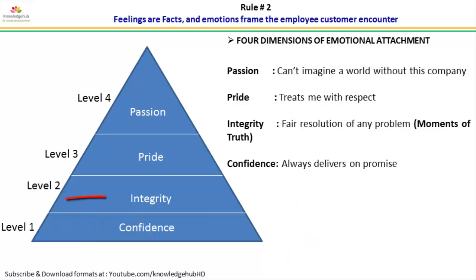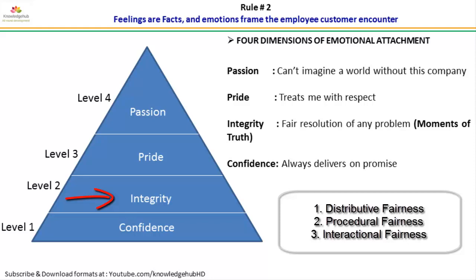At level two of the emotional attachment pyramid, social psychological literature identifies three different types of fairness or justice. The first is distributive fairness, which addresses how resources are distributed. The second is procedural fairness, which covers the processes and systems used to determine how resources are allocated. The third is interactional fairness, which encompasses how people are treated at an individual level.